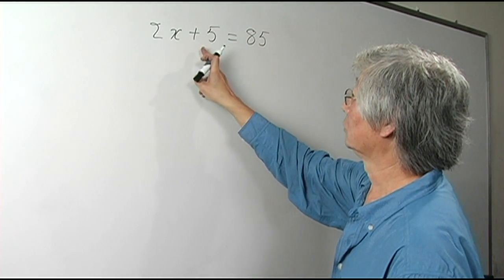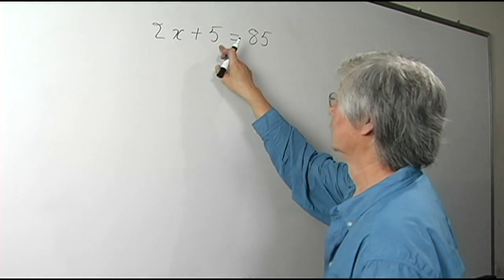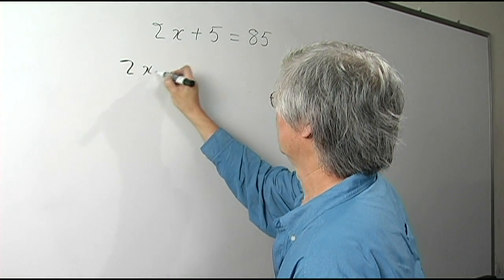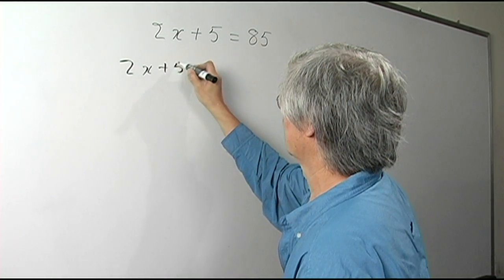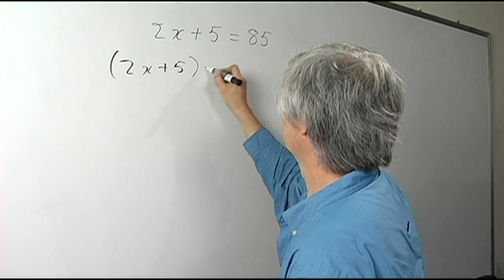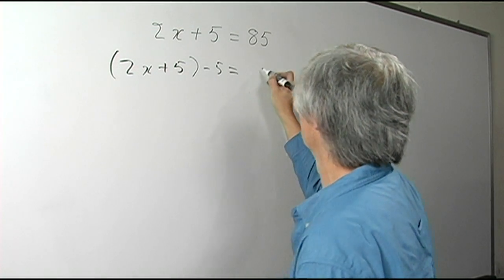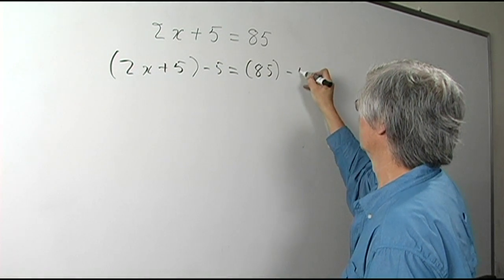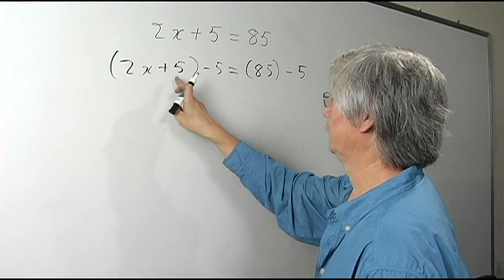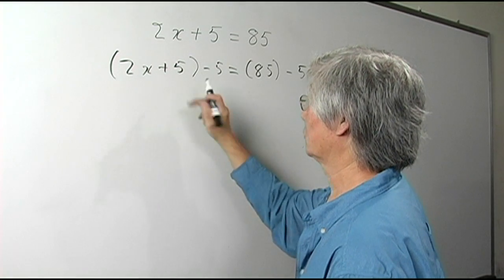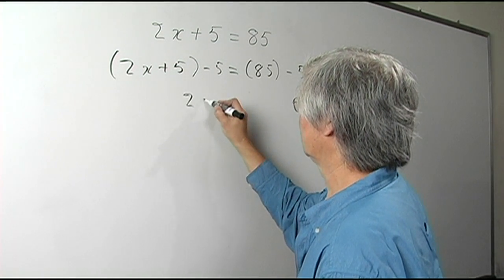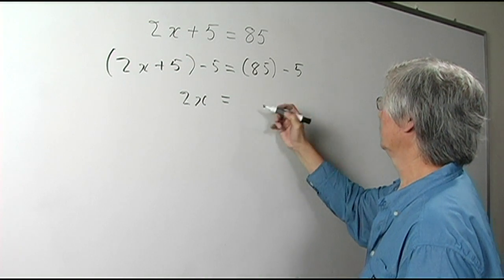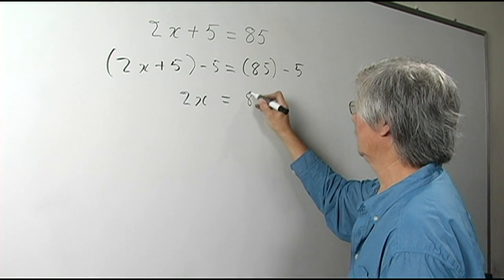The first thing you want to do is get rid of the 5. How do you do that? You subtract 5 from both sides. The 5 and negative 5 cancel out. You end up with 2x equals 85 take away 5, which gives you 80.